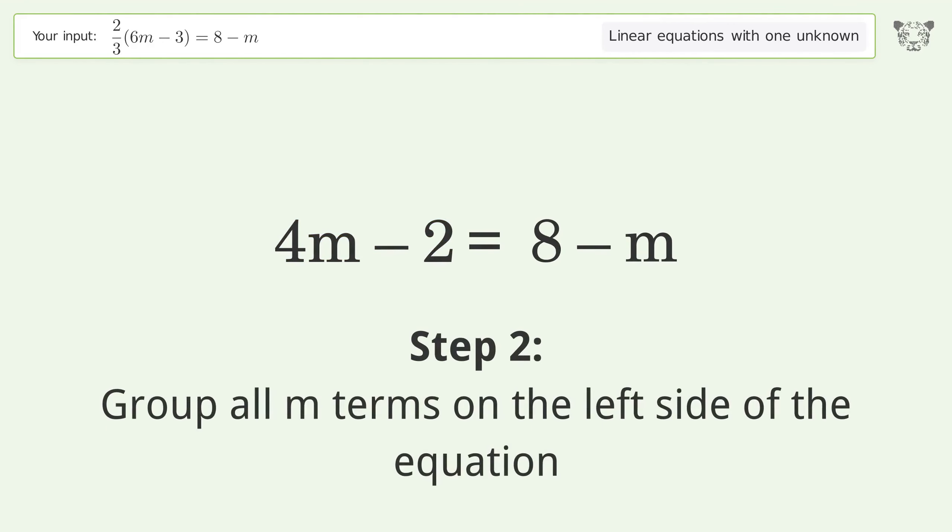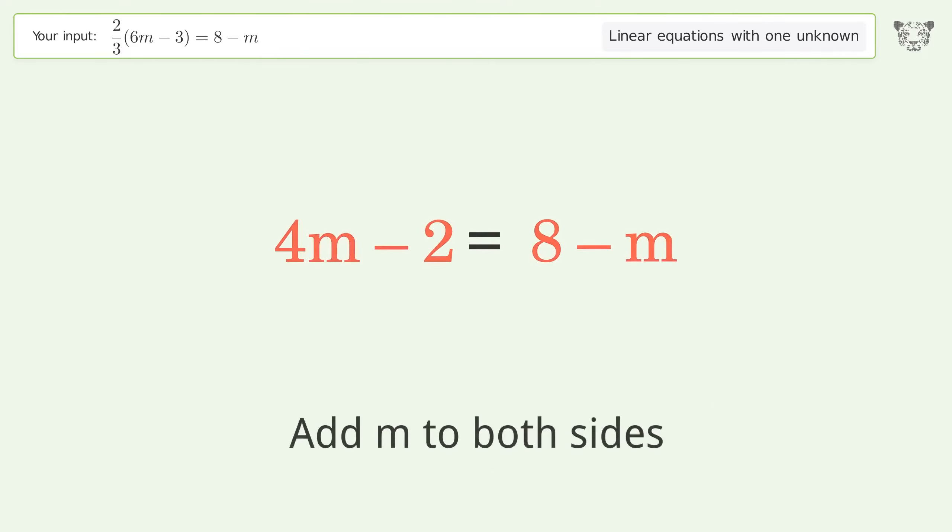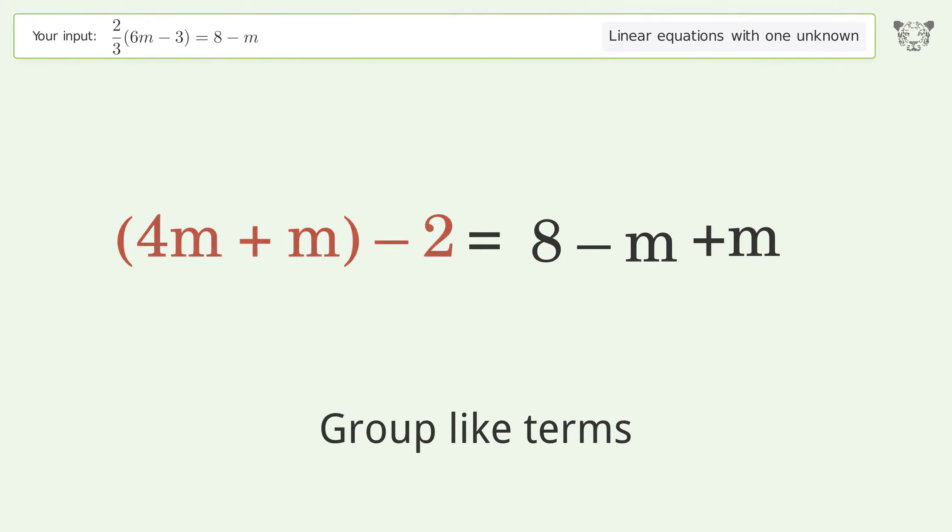Group all m terms on the left side of the equation. Add m to both sides. Group like terms. Simplify the arithmetic.